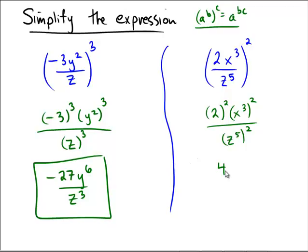x to the third to the square is x to the sixth. And z to the 5 to the 2 is going to be z to the 5 times 2, which is 10. So the final answer here is 4x to the sixth, z to the tenth.